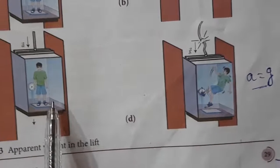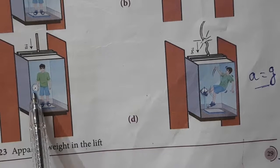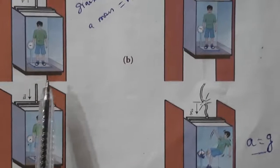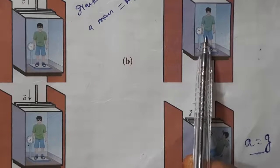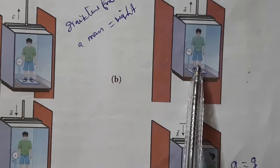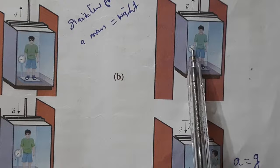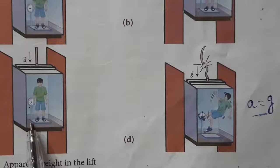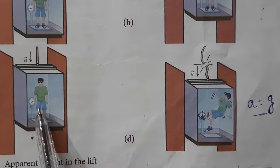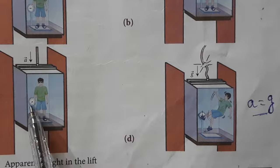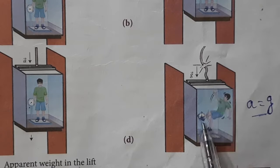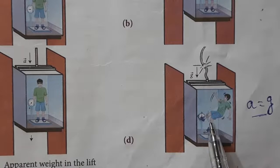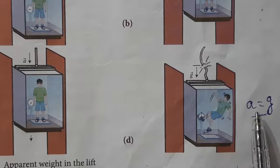Inside the lift, the weighing machine reads zero — zero means weightlessness. To summarize the lift cases: when the lift is at rest, this is the actual weight. When the lift moves upward, the weight increases — the needle goes higher. When the lift moves downward, the apparent weight is less than actual weight — the needle shows lesser weight. When the lift falls freely with the wire cut, the needle shows zero weight — the person is in a flying state, feeling weightlessness because a = g.